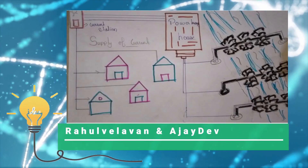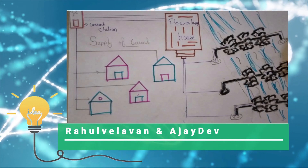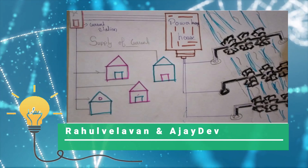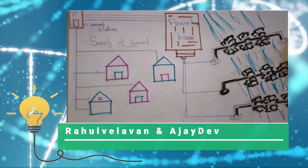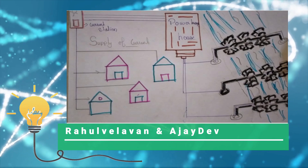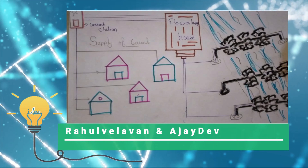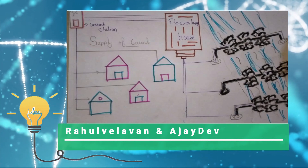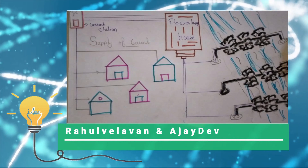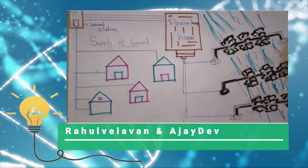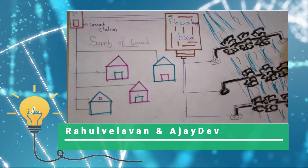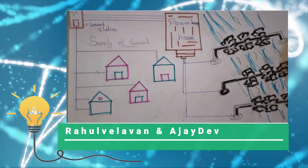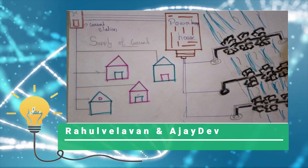Hello everyone, I am Rahul Vervan and Ajay Dev. Today we want to show how electricity can be produced from river water using a dynamo motor. First, we place a dynamo motor in the river. Due to the force of the moving water, the dynamo motor starts to rotate, and during rotation, electricity is formed. The electricity is stored in a powerhouse, then moves to a current station, where it is supplied to homes according to their needs. This type of electricity production is very useful for homes near rivers, and the cost is much lower than normal electricity.